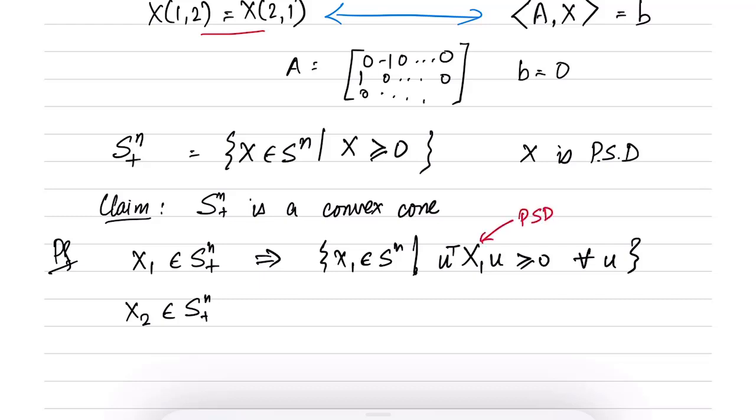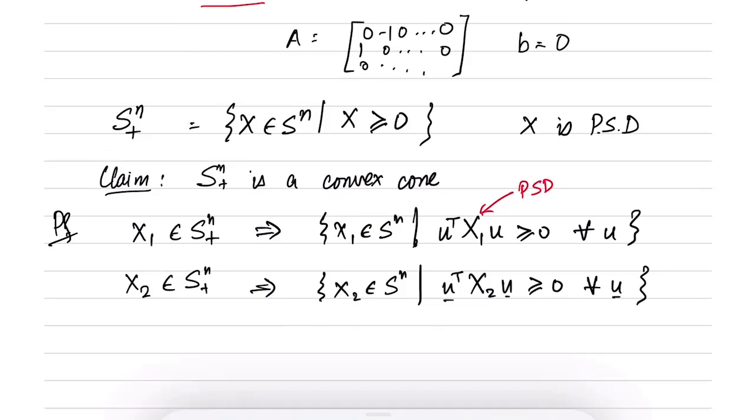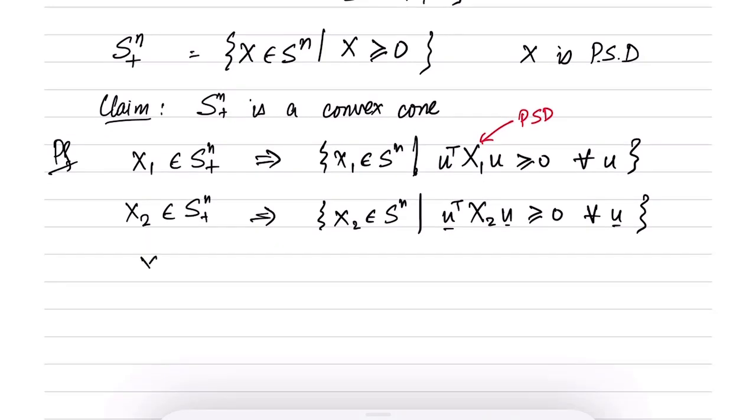So we have these two. Now let us consider Y equal to theta1 X1 plus theta2 X2. If you remember for convex cones, we required that theta1, theta2 are both greater than equal to 0 and there is no other restriction.